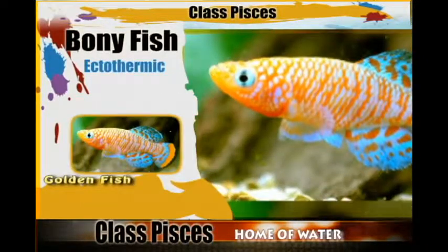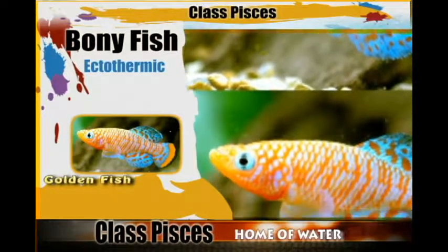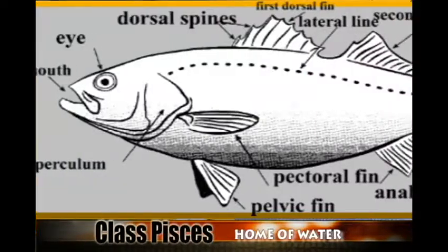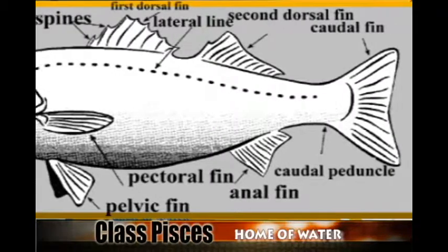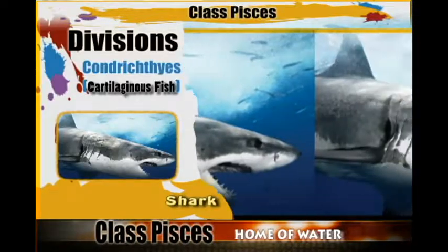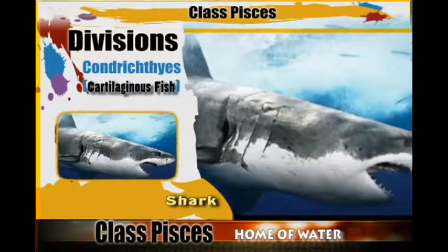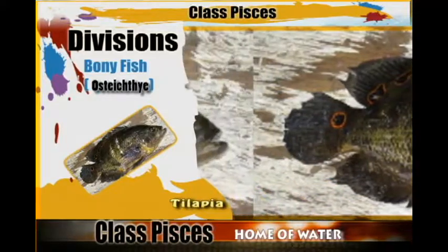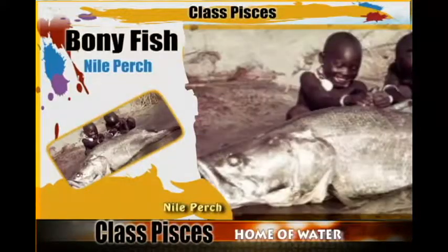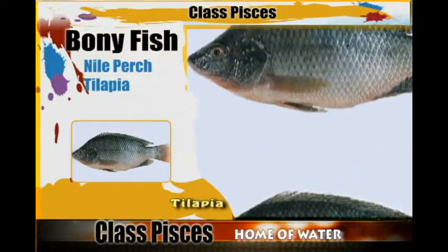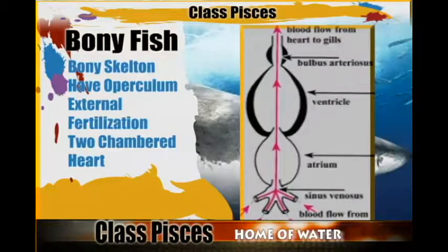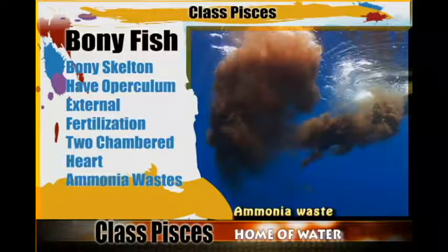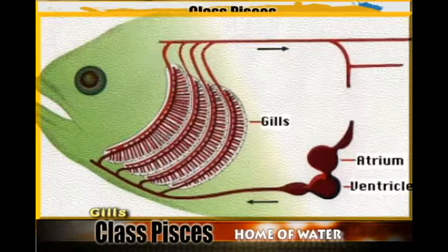They are ectothermic, depending on their environment, and they have fins. So, to summarize: class Pisces has two divisions — the cartilaginous fish and the bony fish. The Nile perch and tilapia are part of the Osteichthyes and they have an operculum, a two-chambered heart, nitrogenous waste in the form of ammonia, and they breathe through gills and have fins.